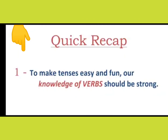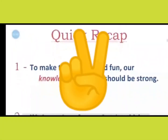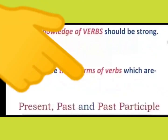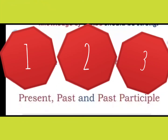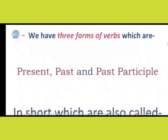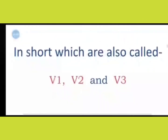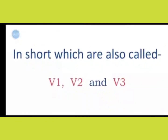First, to make tenses easy and fun, our knowledge of verbs should be strong. Second, there are three forms of verbs — present, past and past participle. In short, we also call them V1, V2 and V3, because every time we don't use the full words. To just make it easier, we use V1, V2, V3.